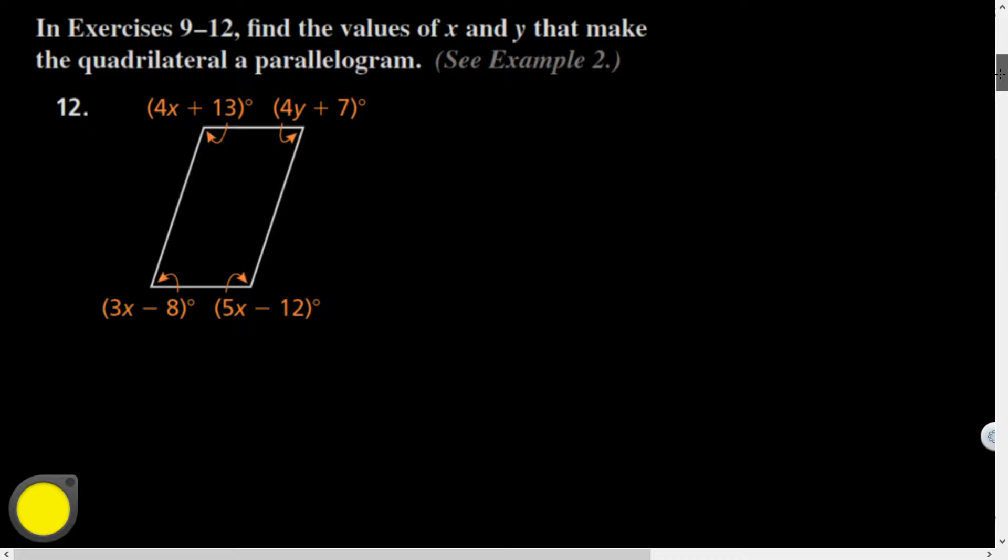All right, here's question 12, this one's good. Find the values of x and y that make the quadrilateral a parallelogram? Based on the locations of these, I'm looking for the expressions that have x's or y's. I want to relate the ones that have x's, and so I might say that these two expressions are equal. All right, subtract 4x from both sides, add 12, x equals 25. Now what could I do?